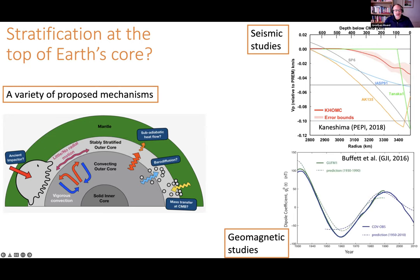A whole bunch of different mechanisms have been proposed to explain that layer — either it's a primordial layer there for the entirety of Earth's history, related to the way the core originally formed and differentiated from the mantle, or impacts and injections from other bodies during the formation process, or it formed gradually over the age of the Earth due to thermal or chemical effects, gradually accumulating light material at the top. In such a layer, you can have relatively little radial motion, which has implications for the geomagnetic field.